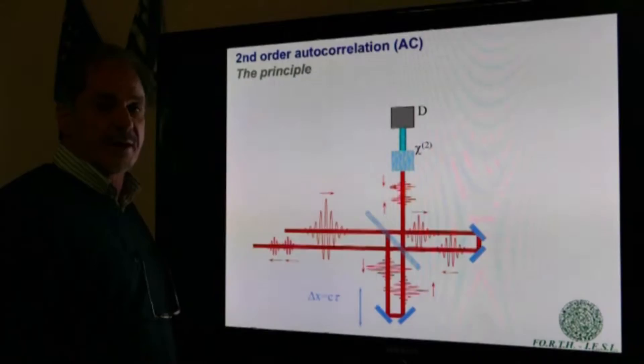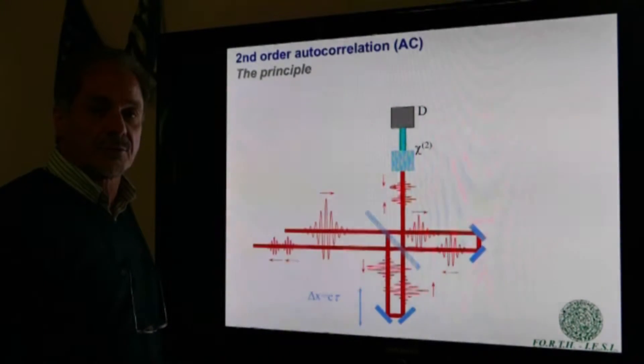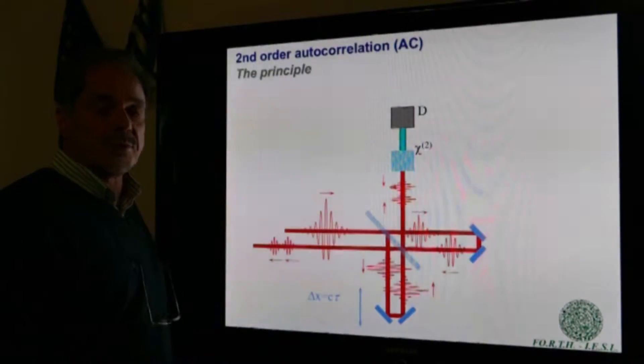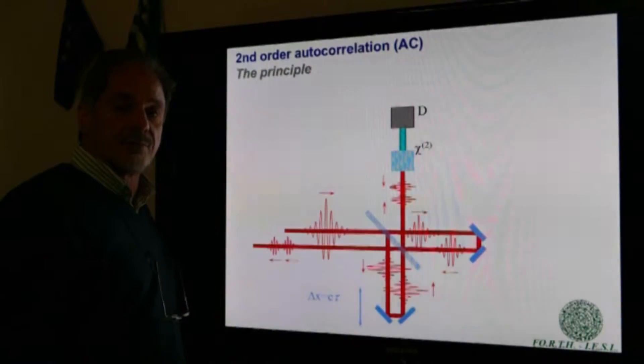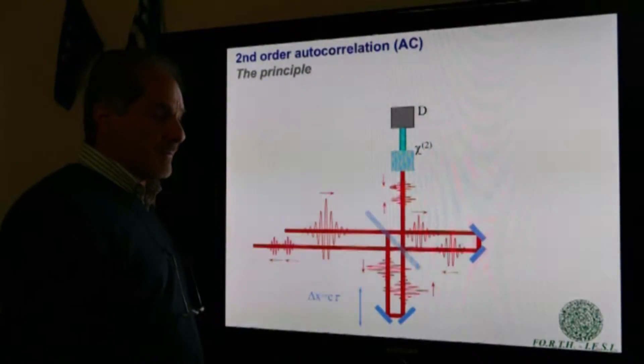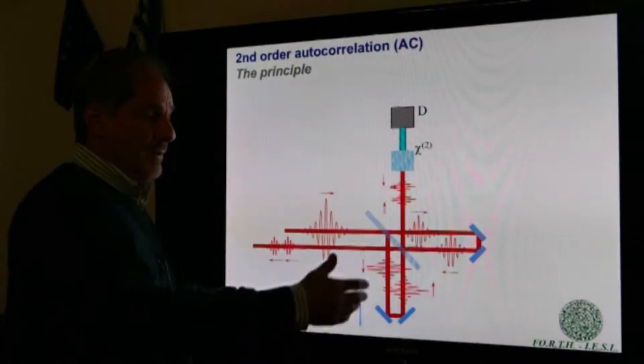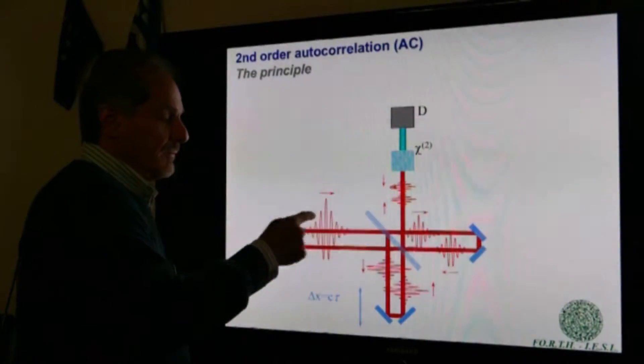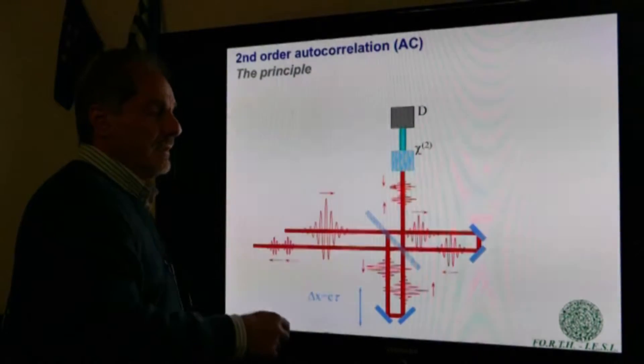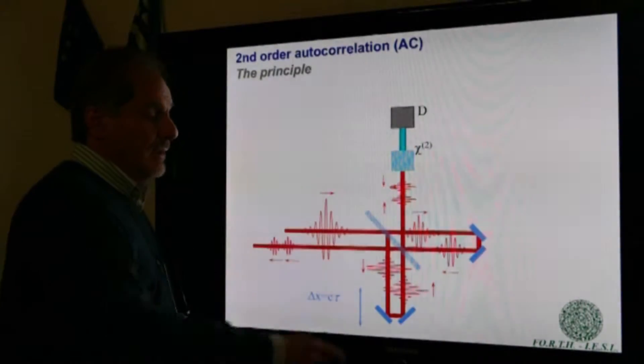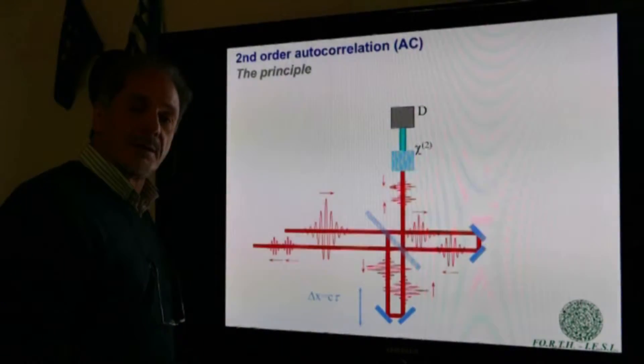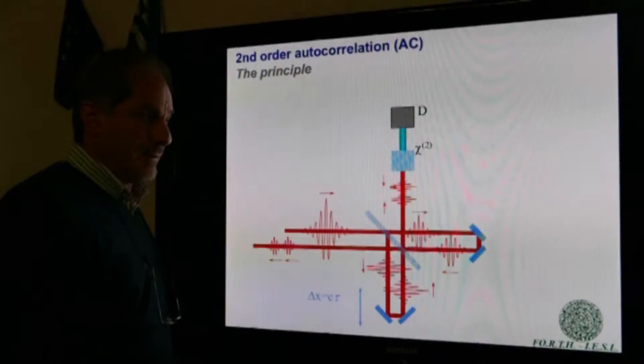I will start with an introduction of the second-order autocorrelation technique, which is the basis of measuring the duration of femtosecond pulses in femtosecond laser laboratories. It is based on generating two replicas of the laser pulse that can be mutually delayed using, for example, a Michelson interferometer.